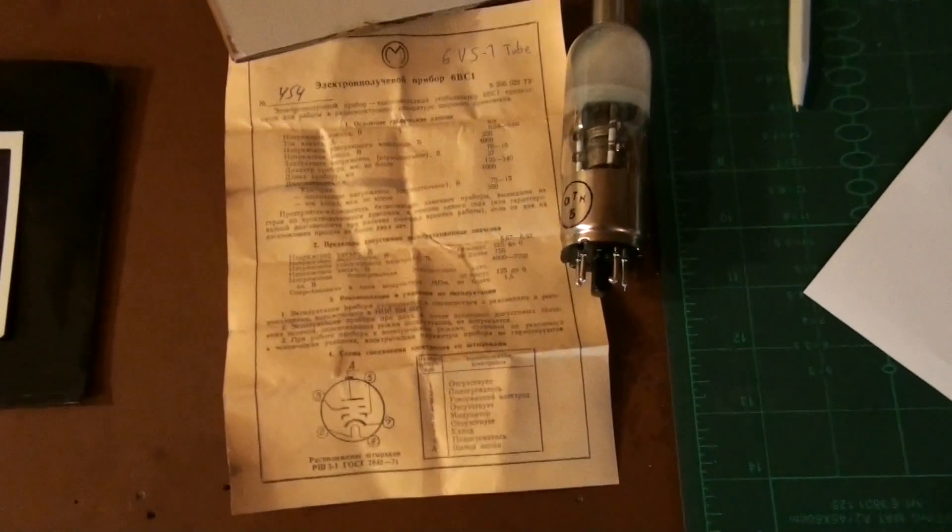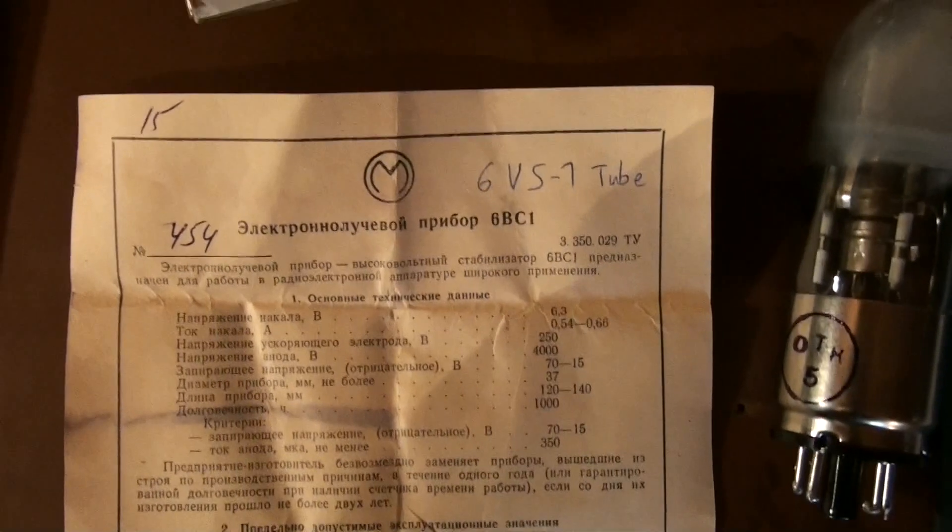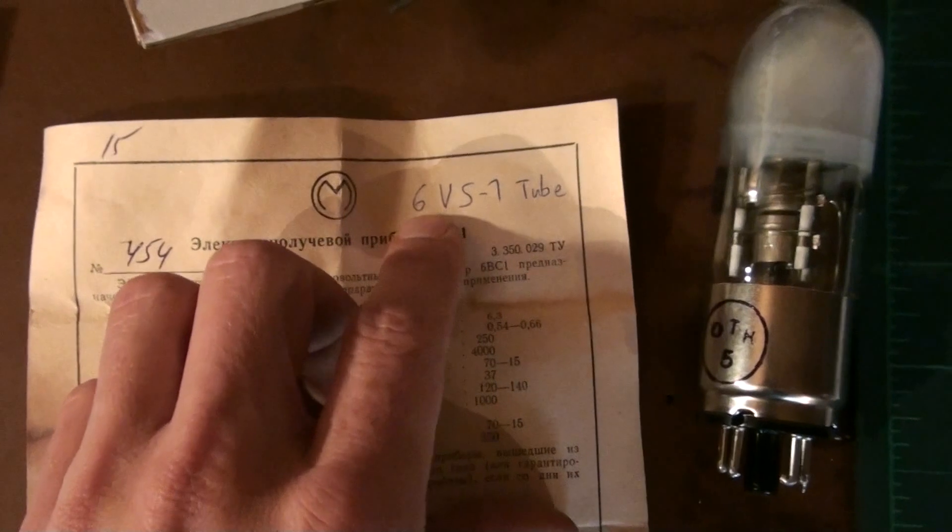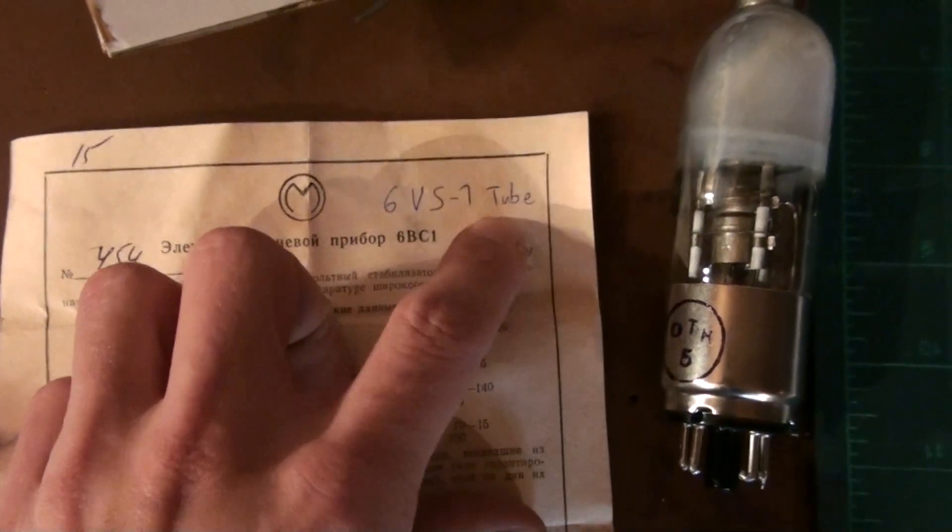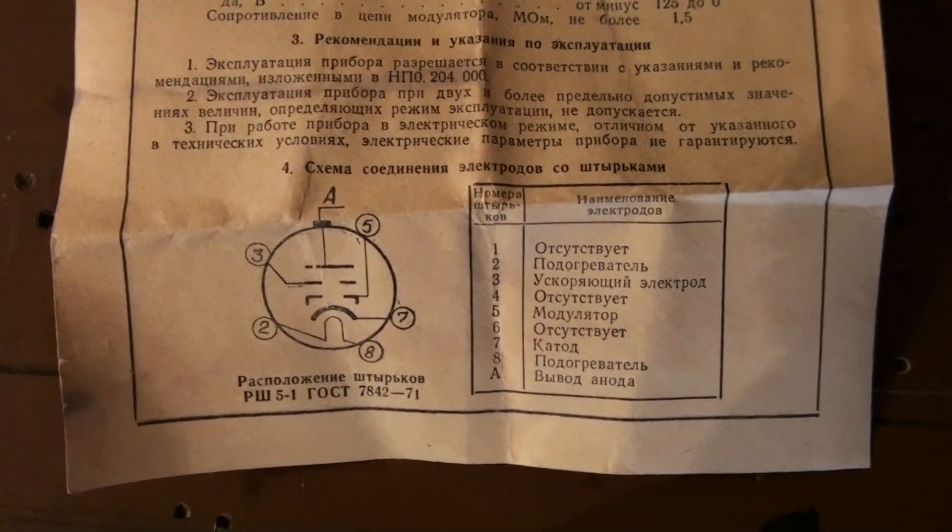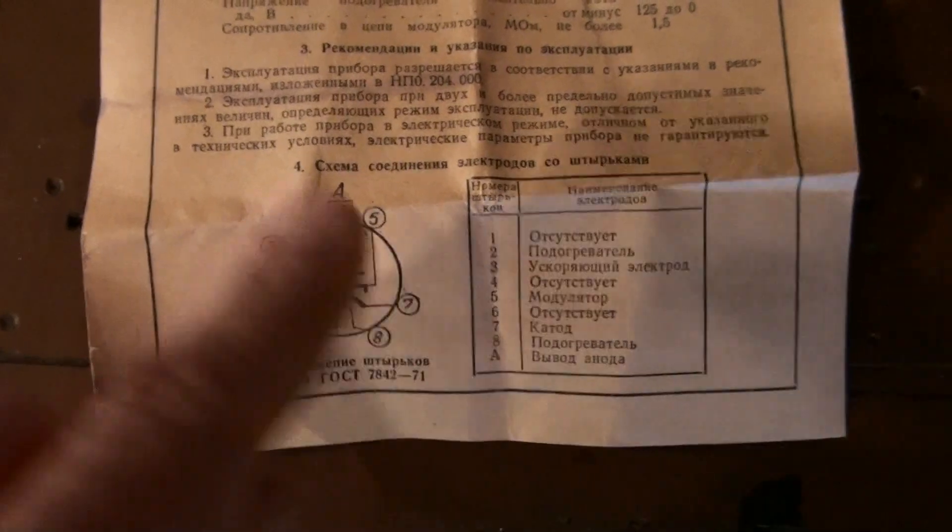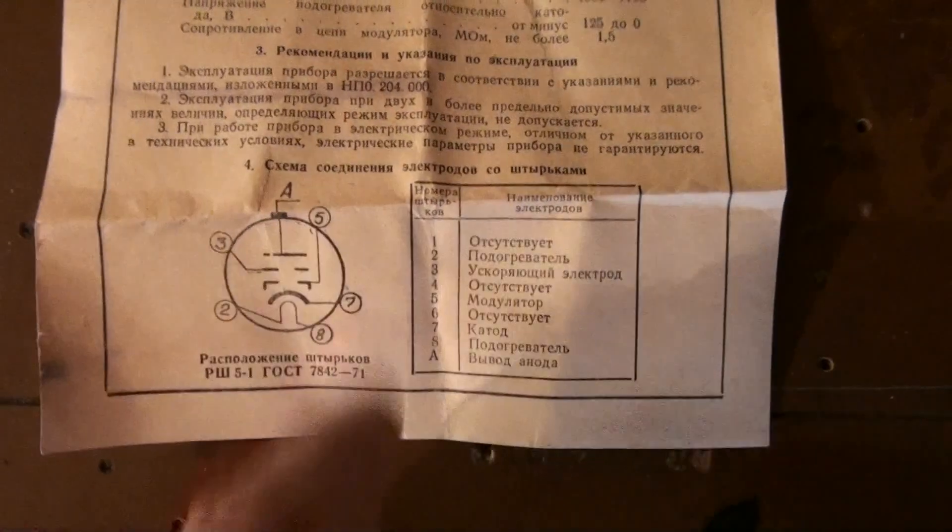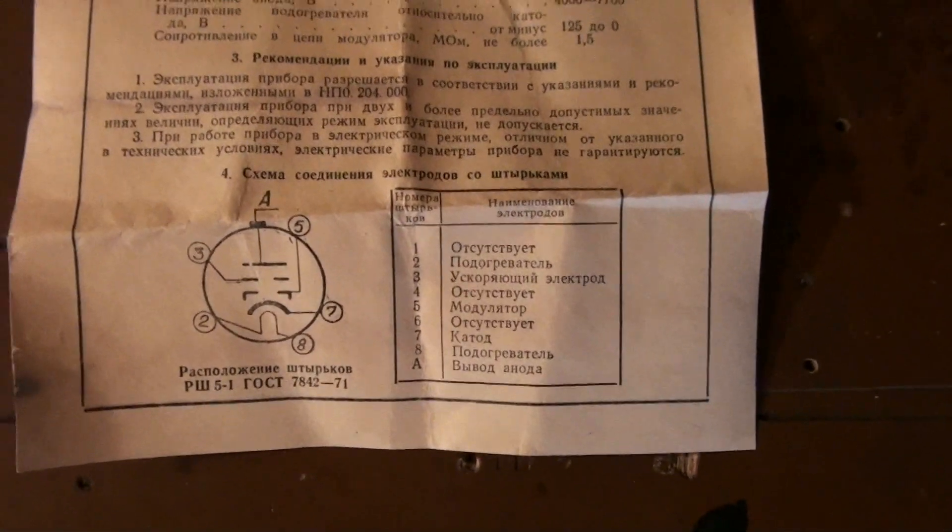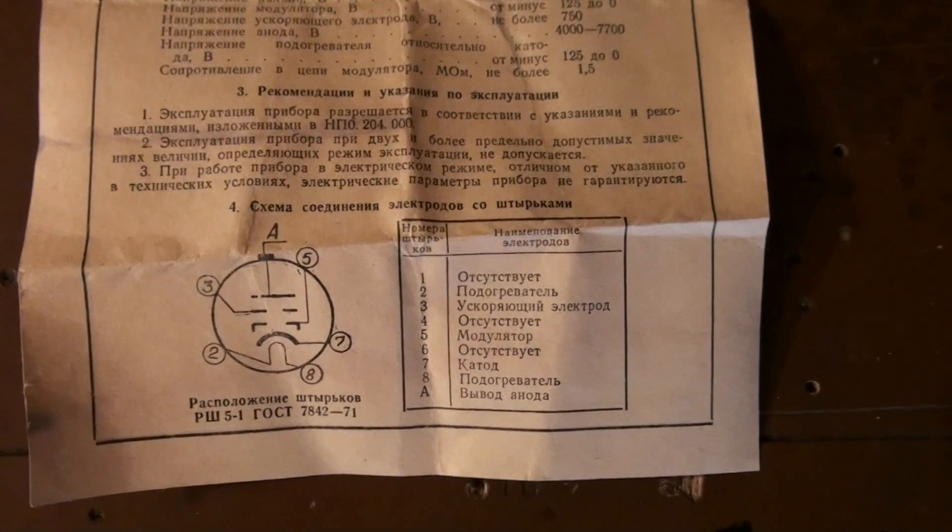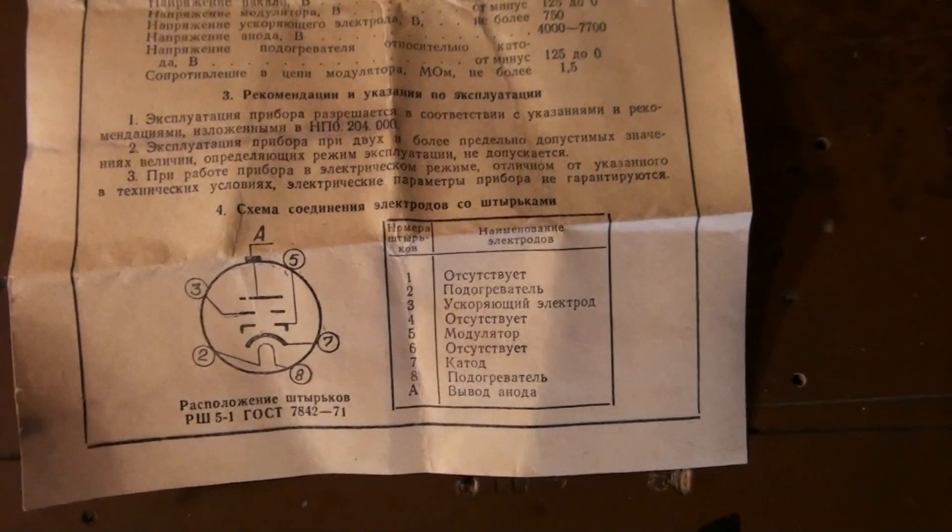Before we go to that part, just take a last little look at the tubes. I got these awesome Russian tubes - in Cyrillic they're called 6BC1, but in Latin alphabet that would be 6VS1. You get this little wiring diagram - it's rather simple. You have a heater circuit and then you just connect to this one and to the top one and shoot your electrons through.